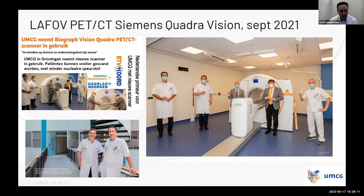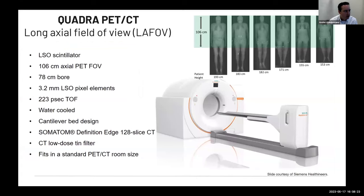The opening was attended by our chair of the board of directors and the director of Siemens, and we received significant attention in national newspapers about this new fast scanner. The Quadra PET-CT has an axial field of view of 106 centimeters. For most oncological indications that's enough — you can scan from head to mid-thigh in almost every patient, including the tall Dutch patients around 190 cm.